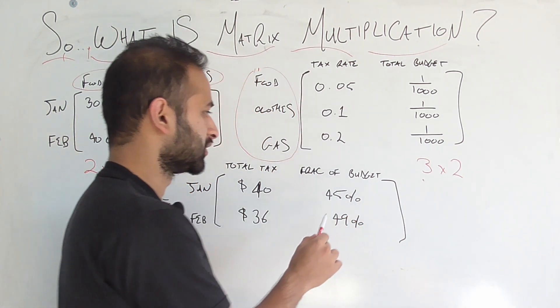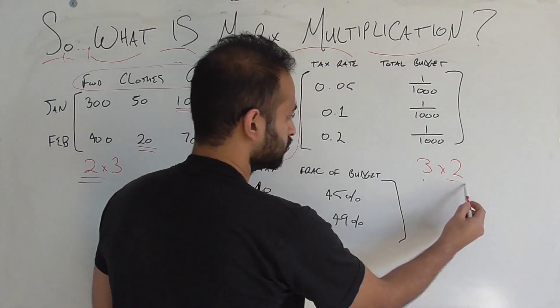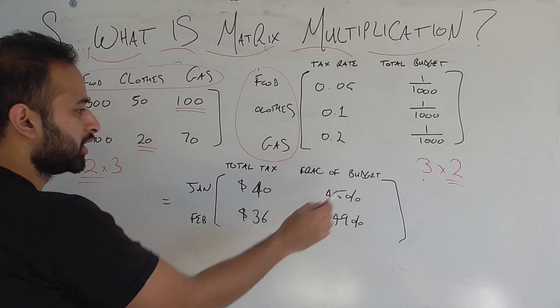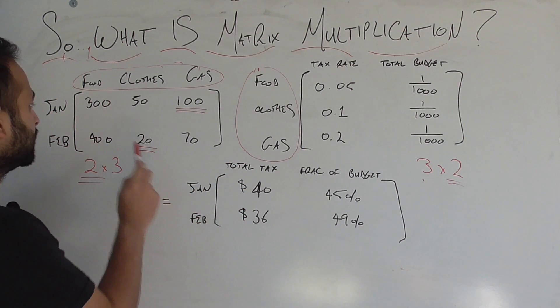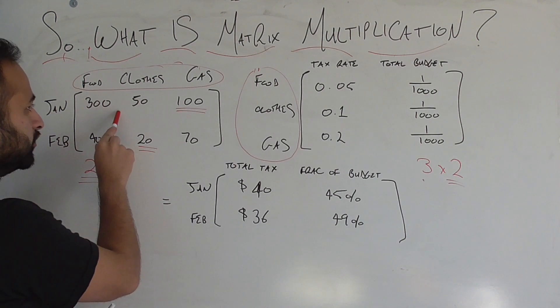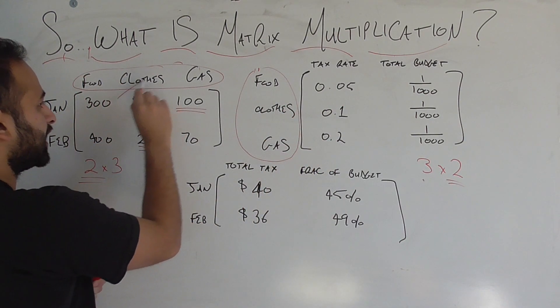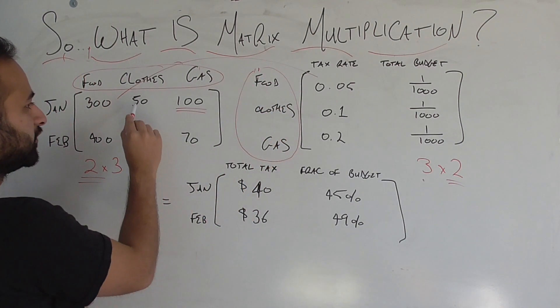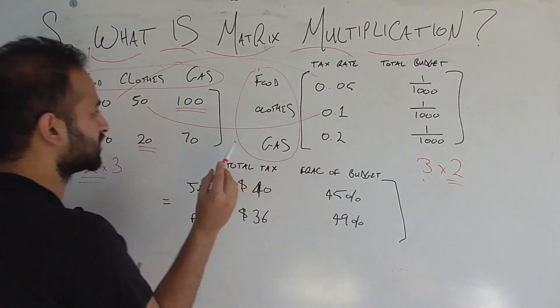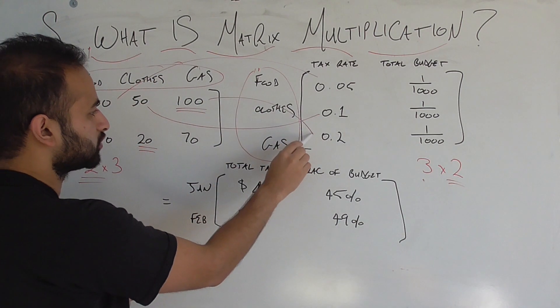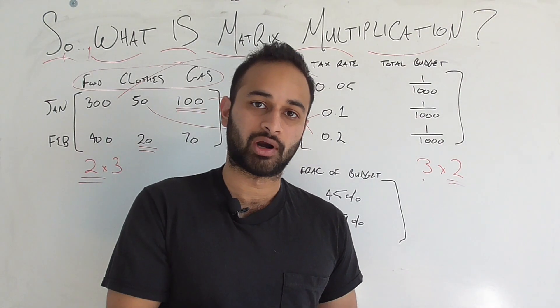So we go ahead and do the matrix multiplication, and its dimensions will of course be two by two, which is exactly what we see here. And how do we interpret this? For example, how do we interpret for the total taxes? We see that in January, we spent 300 on food, which is taxed at 5%, so we do 300 times that 5%. We spent 50 on clothes, taxed at 10%, so we do 50 times that 10%, and we do 100 times 20%. And that's going to give us the total amount of money we spent on taxes in January.